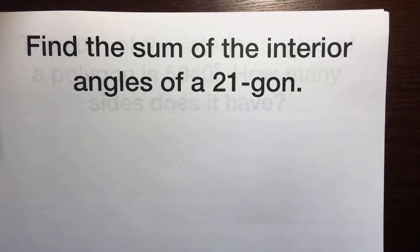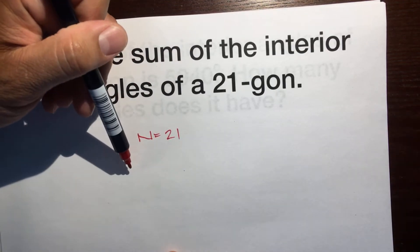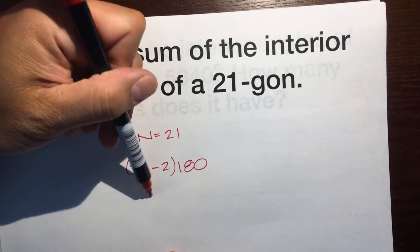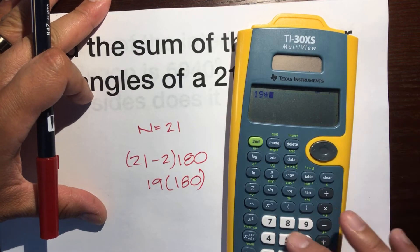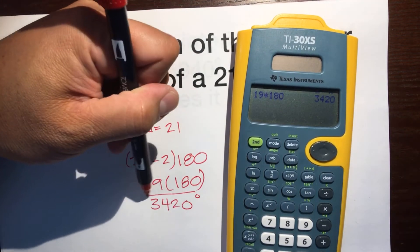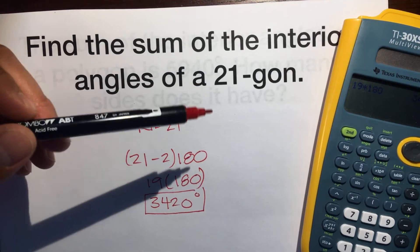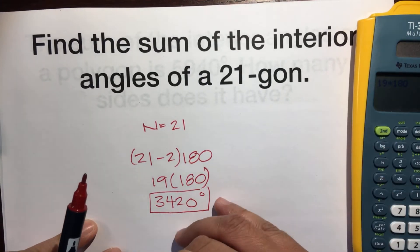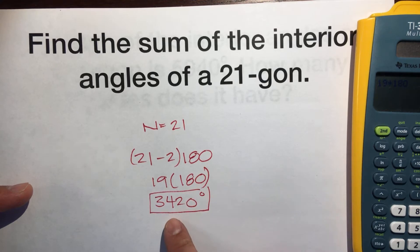Find the sum of the interior angles of a 21-gon. Our n is 21. How many triangles are there? 21 minus 2 triangles, which is 19, times 180 — that's the triangle sum theorem. 19 times 180 would be 3,420 degrees. All 21 angles add up to 3,420 degrees. The number of sides, subtract by 2 to get the number of triangles, and multiply by 180.